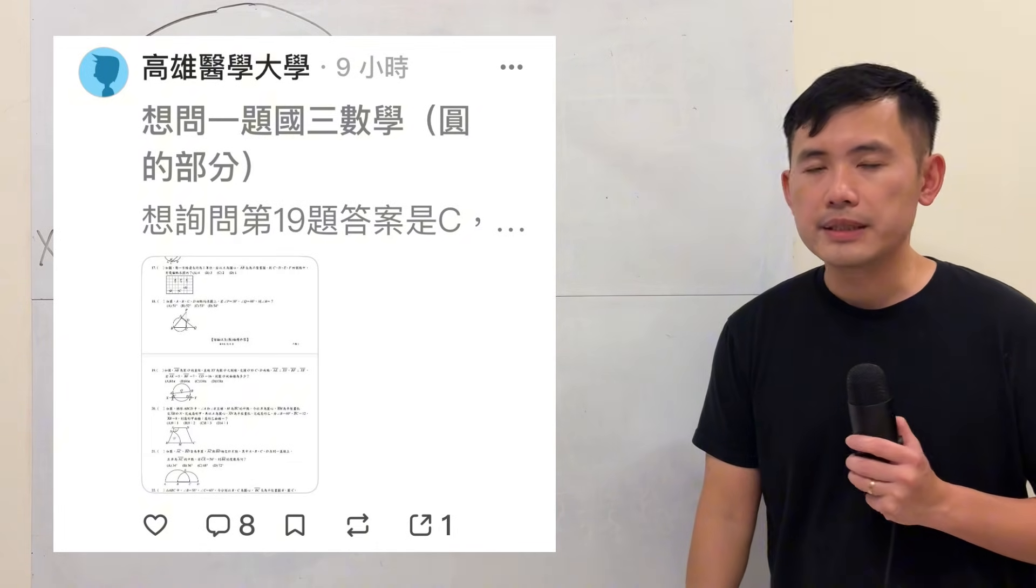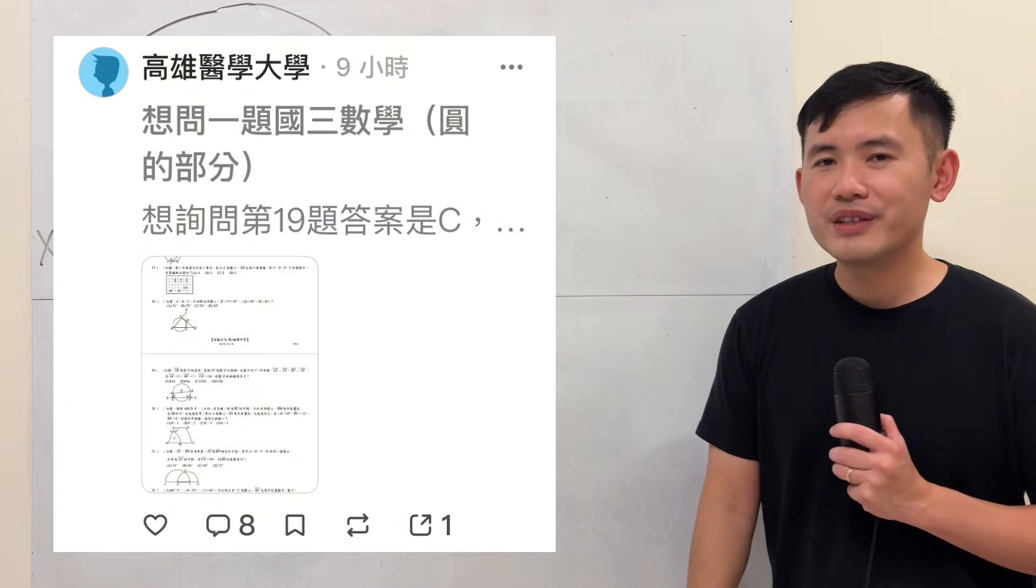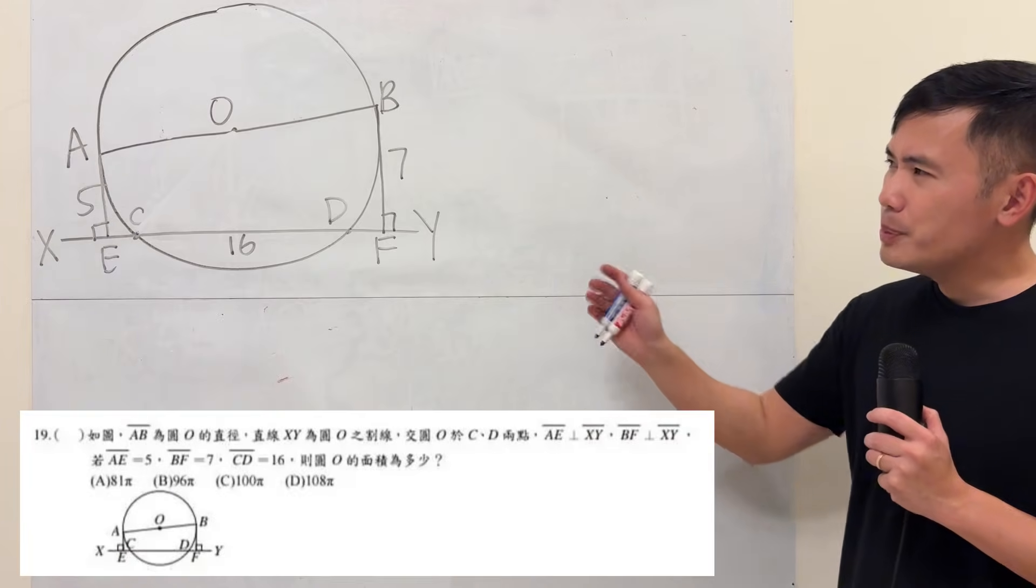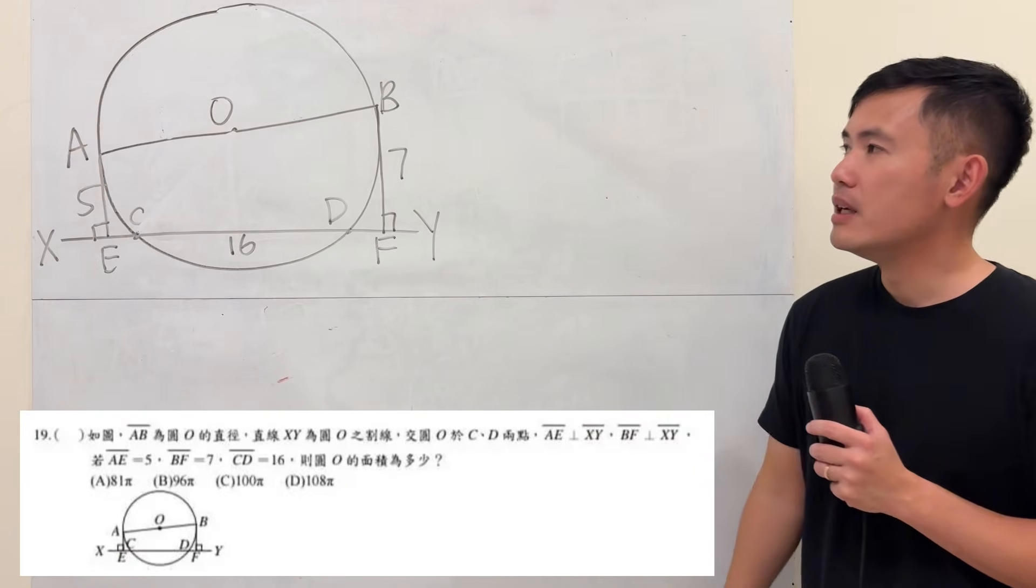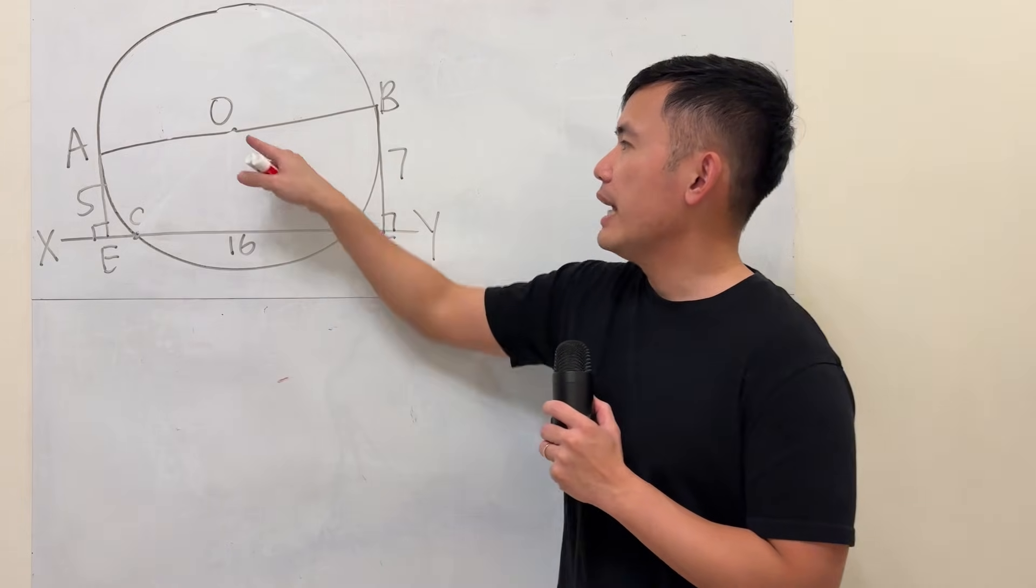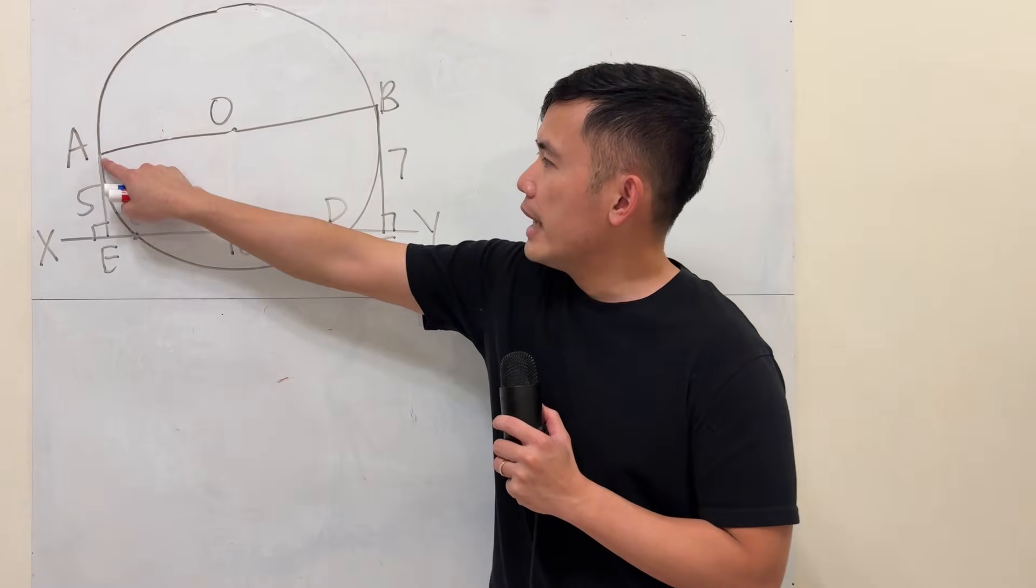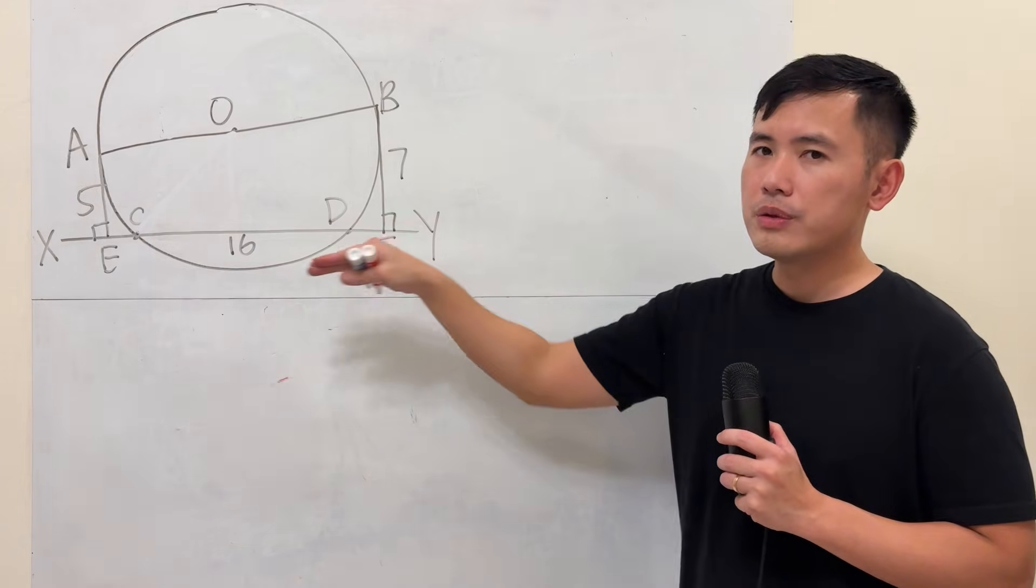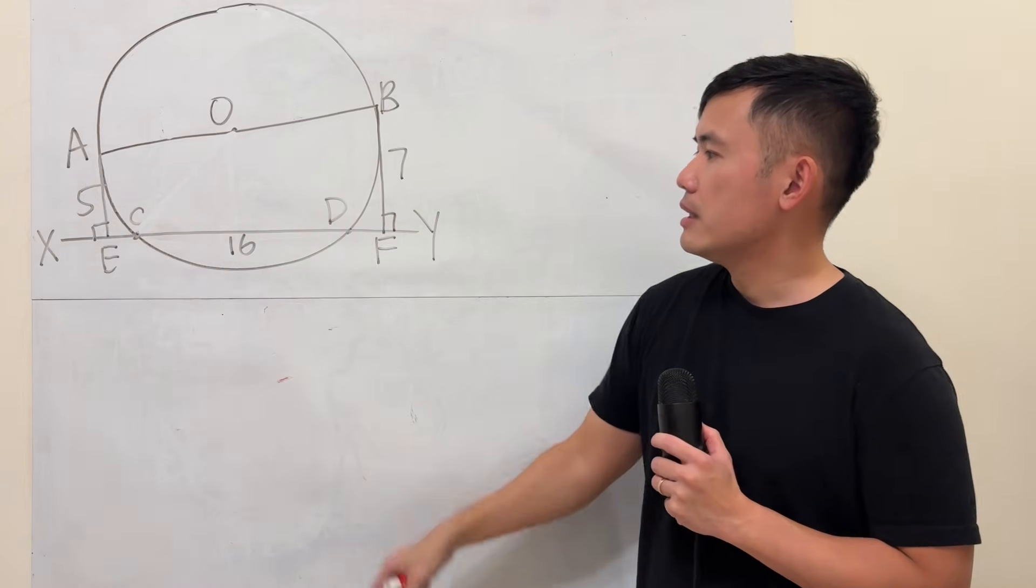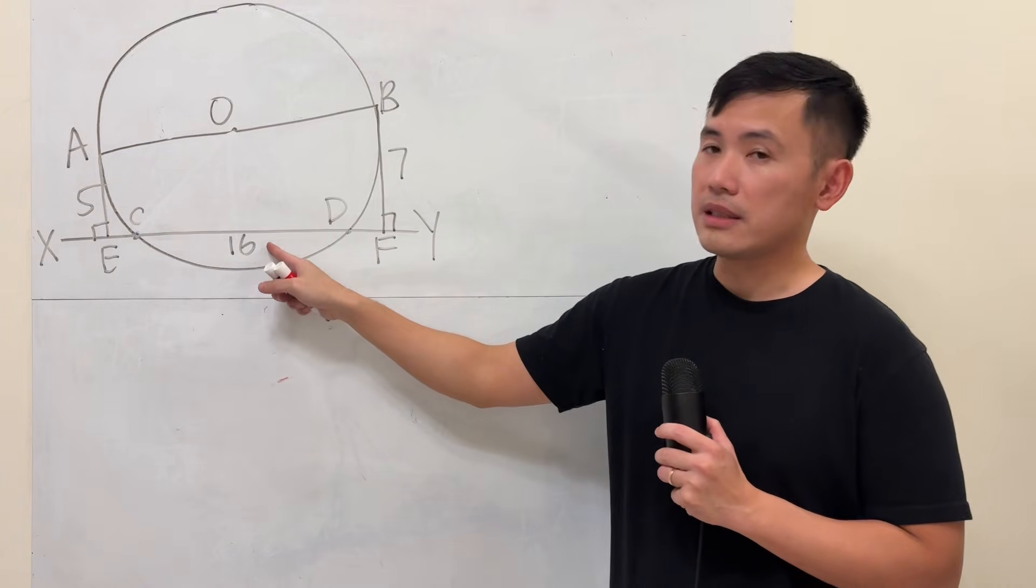I just saw this question on D Card, which is kind of like the Taiwanese version of Reddit. It's meant to be for students and I think it's pretty interesting, so let's have a look. First, we have a circle with O as the center. AB is just a diameter, and we have a line XY cutting through the circle at points C and D, and the distance is 16.